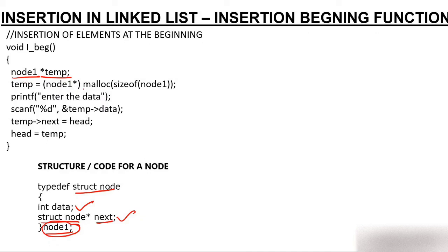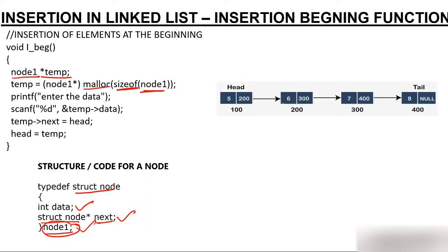malloc creates a new node — it allocates memory of size sizeof(node1). node1 has two parts: data and address. So a new node gets created and its address is returned and stored in temp. Suppose the address of this new node is 50 — so temp will now hold 50.